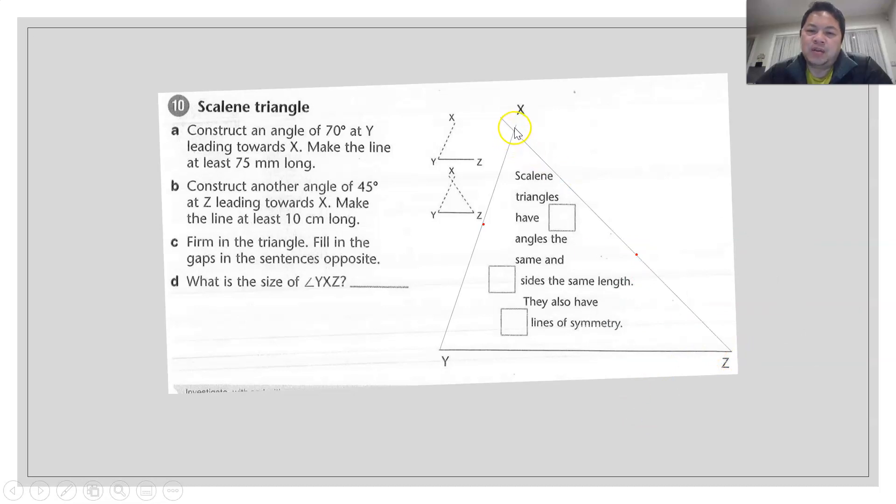As you can see, this part here, whereby the two lines touch each other. This point here. This point is actually X. Got it? And after drawing this triangle, do answer the rest of the questions accordingly.